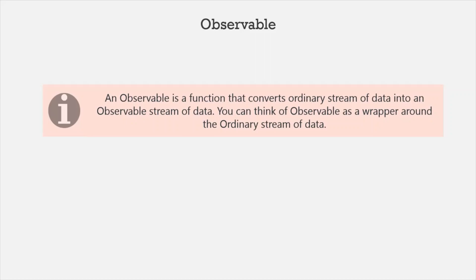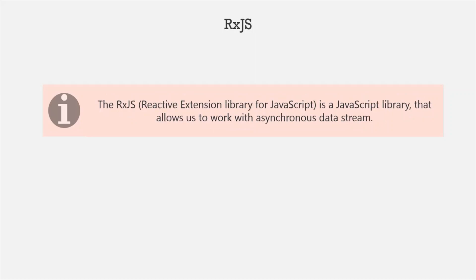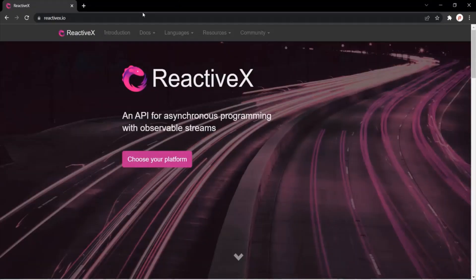Now, observable is not native to Angular or JavaScript — it is provided by the RxJS library. RxJS is a JavaScript library that allows us to work with asynchronous data streams. RxJS stands for Reactive Extension Library for JavaScript. If you want to learn more about RxJS, you can visit the reactivex.io web page, where you will find everything related to reactive programming in JavaScript.